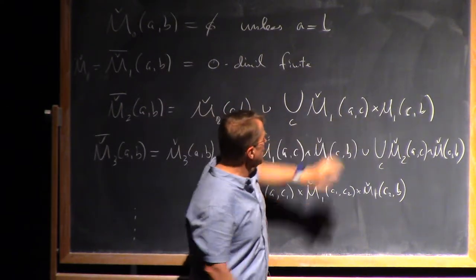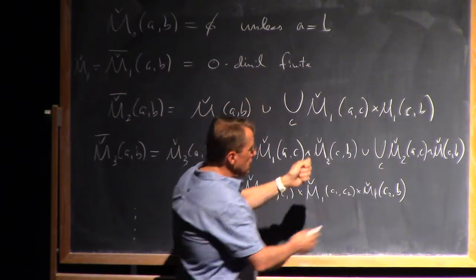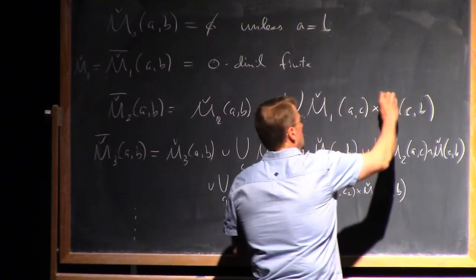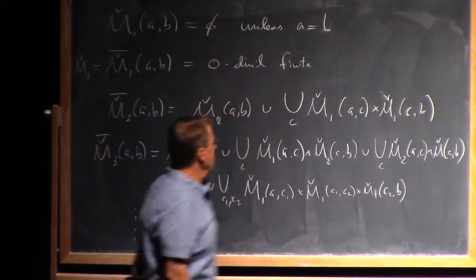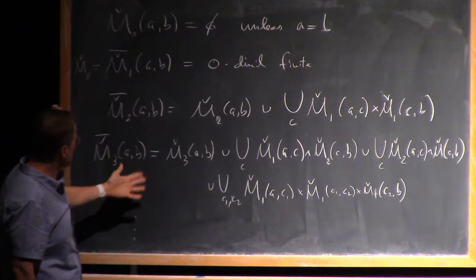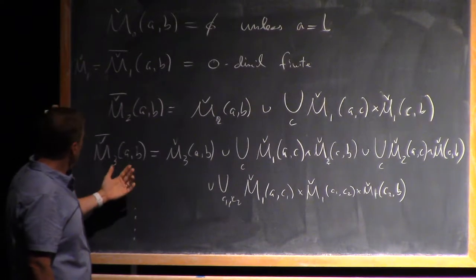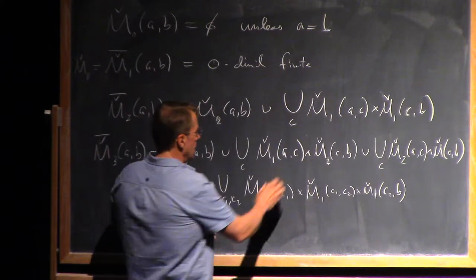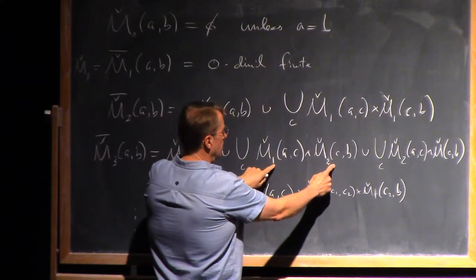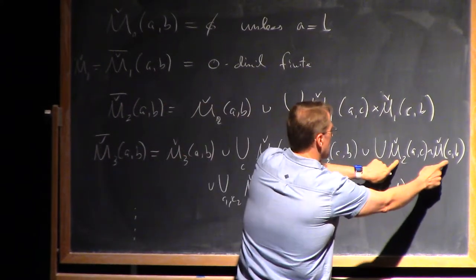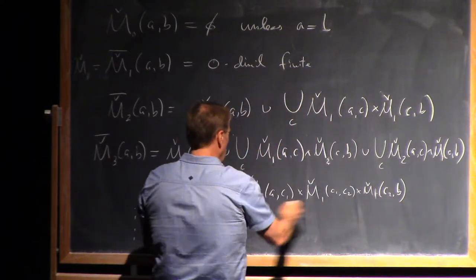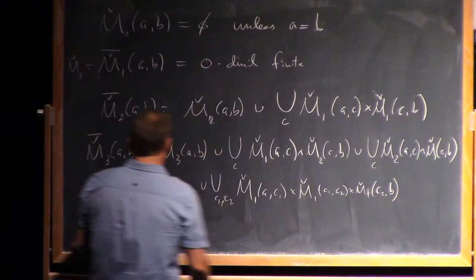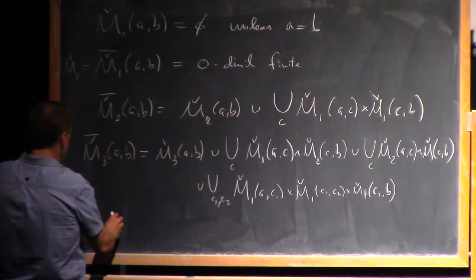And then its boundary is all possible breaks that give you one-dimensional moduli spaces between them, and then mod up by translation. For the three-dimensional moduli space, top stratum is this three-dimensional bit, then it can break into a one-dimensional and a two-dimensional bit on one side, or in the opposite order. And then there's a bit that's where there are two breaks. So this guy's two-dimensional.